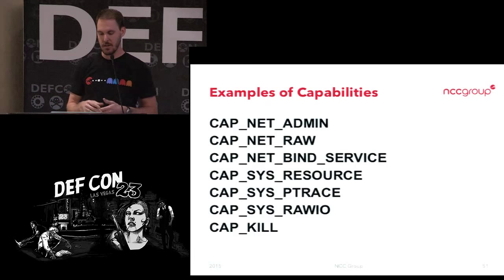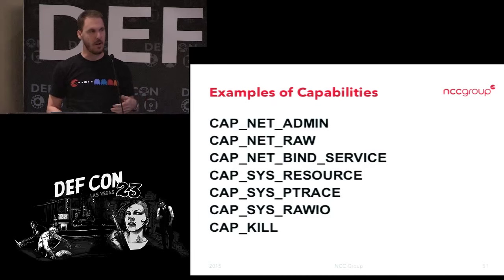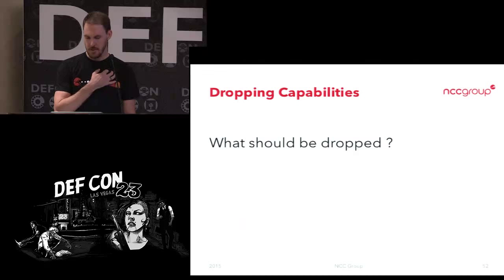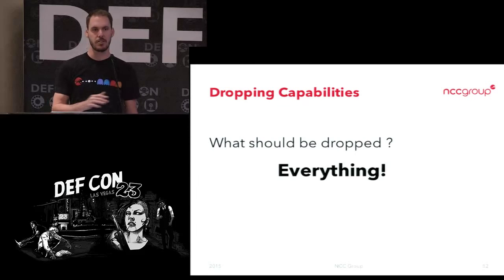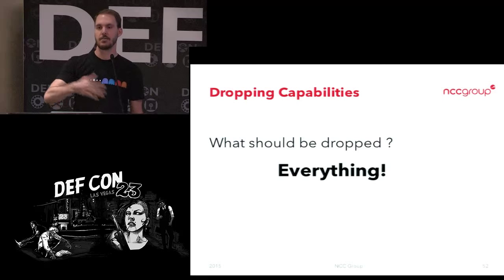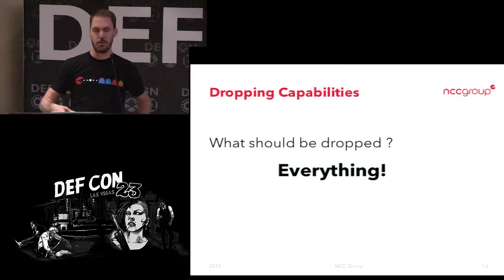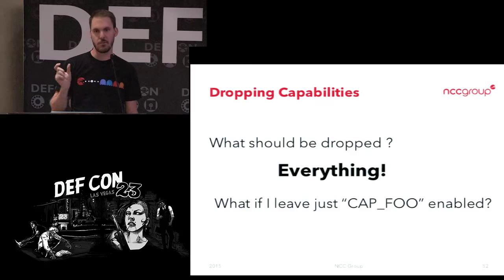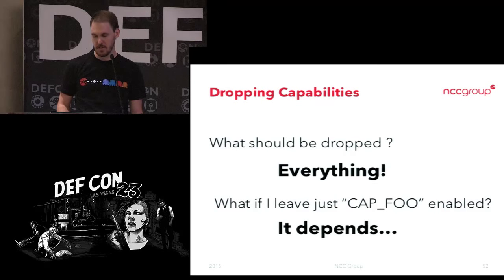Some of the dangerous capabilities you might commonly encounter: being able to receive raw packets, bind to something lower than 1024, change resource controls, or send kill signals. Everyone always asks what capabilities should be dropped — and really, you want to drop all of them. You want to set up everything for your container ahead of time, and then when you pivot into it, throw away all your capabilities and just live in your cocoon where you can't do anything. Then you get questions like: 'what if I just leave this one capability enabled?' And the answer is: it depends.